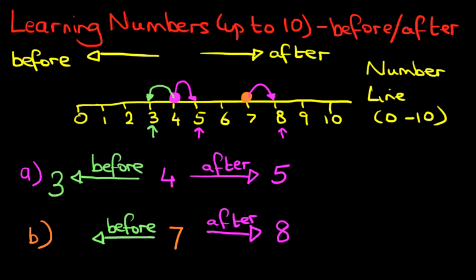How about the number before? Well we are at 7. We want to take one jump back. It is now at number 6. So the number before 7 is 6.